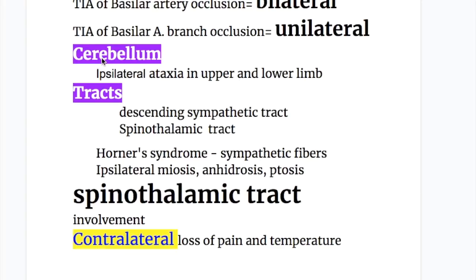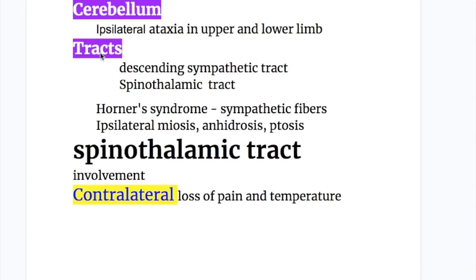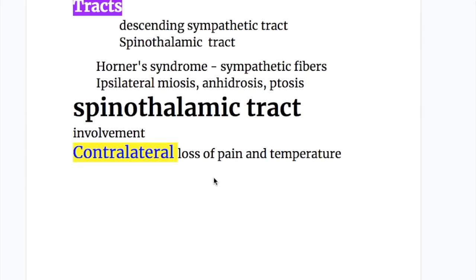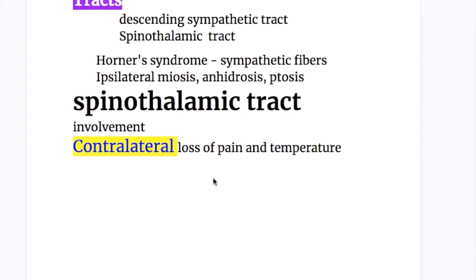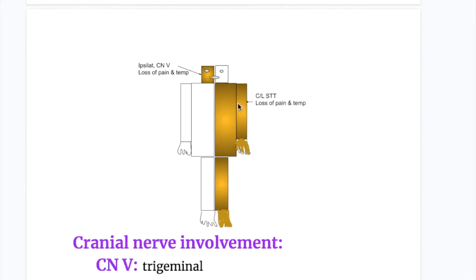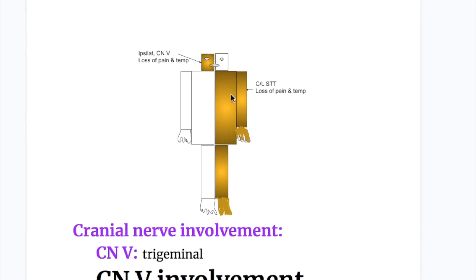Cerebellar involvement causes ipsilateral ataxia in the upper and lower limbs. The descending sympathetic tract involvement causes Horner syndrome — ipsilateral miosis, anhydrosis, and ptosis. Ascending spinothalamic tract involvement causes contralateral loss of pain and temperature on the body surface.